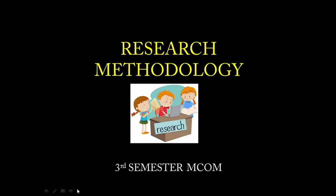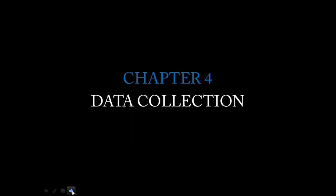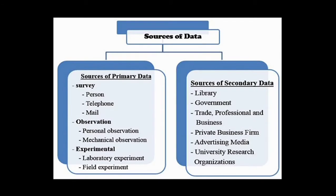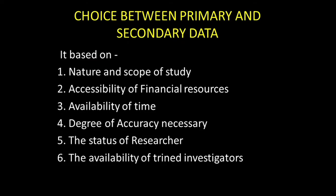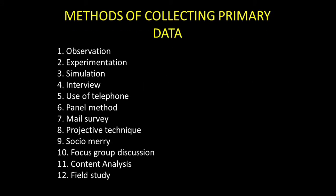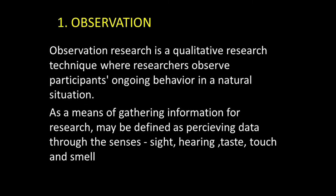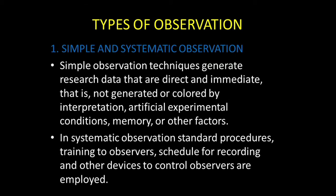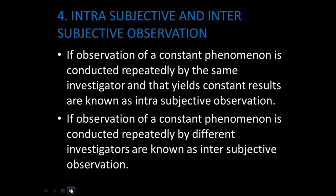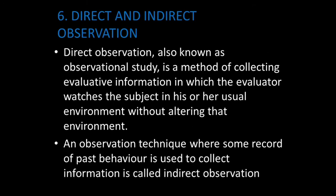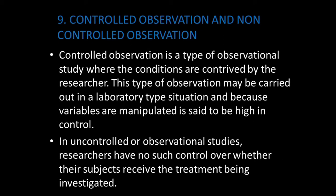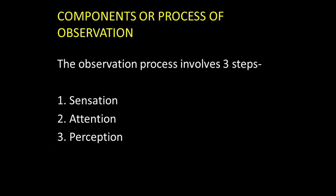Hi everyone. In research methodology, in the previous class on data collection in Chapter 4, we covered: data and its importance, classifications, how to get primary and secondary data, their sources and choice, merits and demerits of both. For primary data collection, the first method was observation — its features, classifications including simple and systematic, subjective and objective, casual and scientific, intrasubjective and intersubjective, factual and inferential, direct and indirect, participant and non-participant, structured and unstructured, controlled and uncontrolled observation.